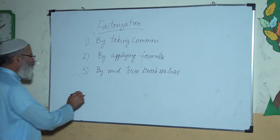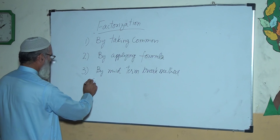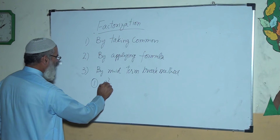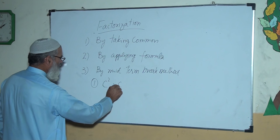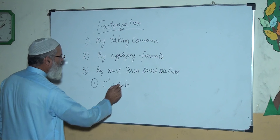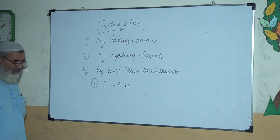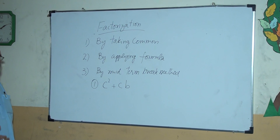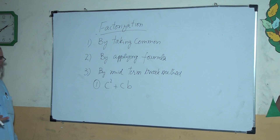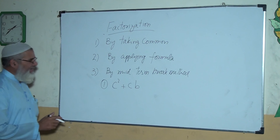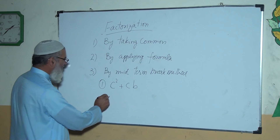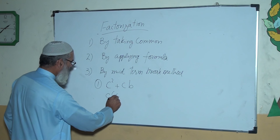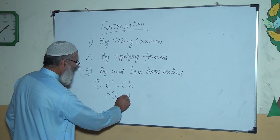Question one: c squared plus cb. Here are two terms — one is c squared, the other is cb. By taking c as a common, there will be c(c plus b).